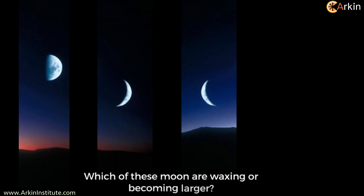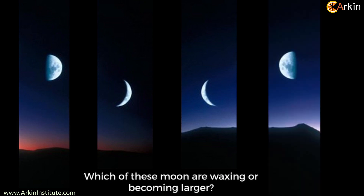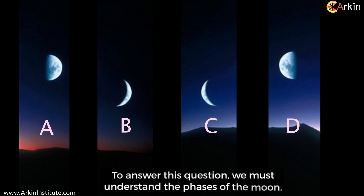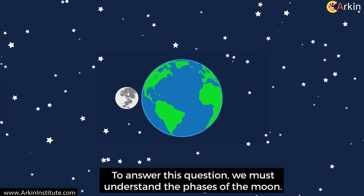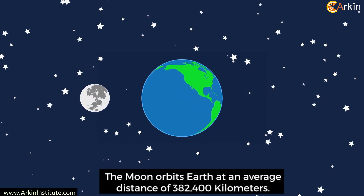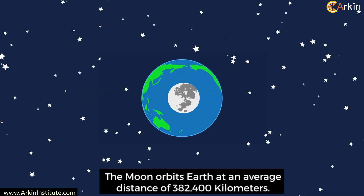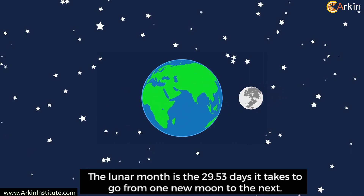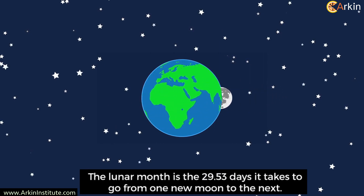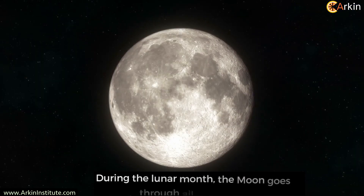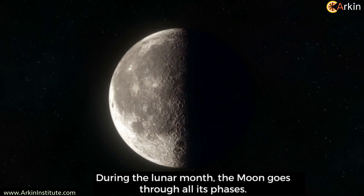Which of these moons are waxing, or becoming larger? To answer this question we must understand the phases of the moon. The moon orbits Earth at an average distance of 382,400 kilometers. The lunar month is the 29.53 days it takes to go from one new moon to the next. During the lunar month, the moon goes through all its phases.